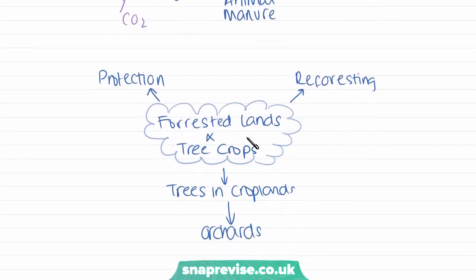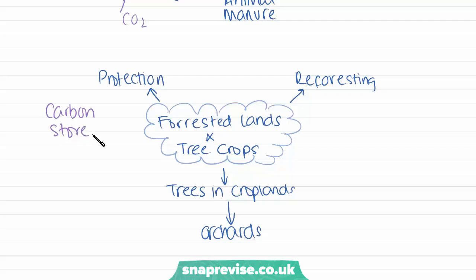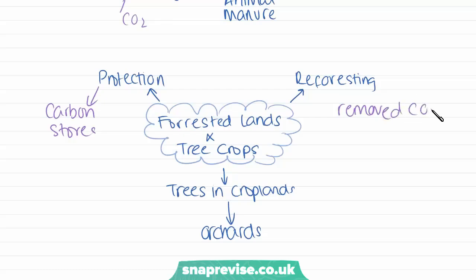In forested lands and tree crops, we can protect these areas from deforestation, as forests are big carbon stores that store carbon which would otherwise be released into the atmosphere. Reforesting areas that have been cut down is also important to increase the size of the store, so that more photosynthesis can take place and more carbon can be removed from the atmosphere and stored in trees. Also in croplands, instead of planting smaller crops, we can plant orchards with bigger trees — the bigger the tree, the more carbon that can be stored.